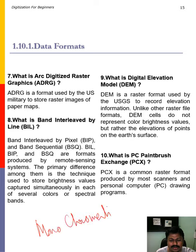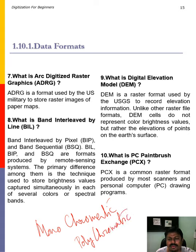A monochromatic image uses one primary band, while a color image is also known as a polychromatic image. The Digital Elevation Model has already been discussed — it is the raster file that stores elevation of each point. The PCX file is a common raster format produced by scanners used with personal computers.